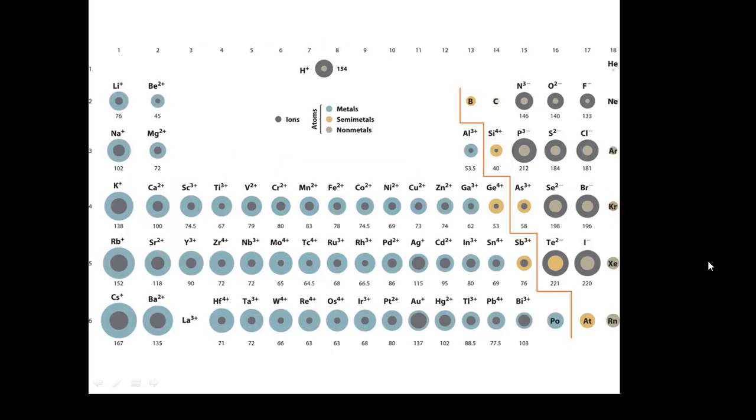You could get this table in an exam. This table shows the charges on different ions and the ionic radius, the size of the ions. You'll be able to figure out using this table whether the bond will be strong or weak.